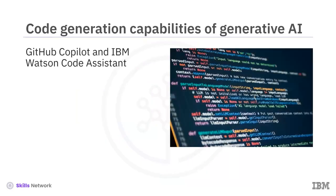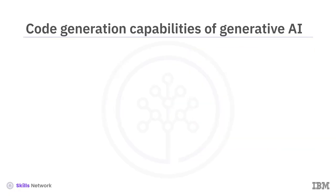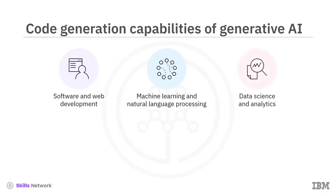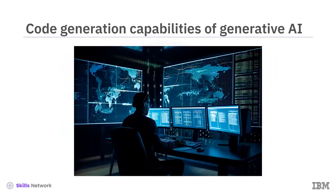GitHub Copilot and IBM Watson Code Assistant are AI-based programming assistants that help autocomplete code, accelerate hard tasks, and generate code for provided input. AI-generated code can be used in software and web development, machine learning, and natural language processing, data science and analytics, robotics and automation, virtual game and AR-VR environment development, and audio, video, and speech processing. Software developers can benefit from leveraging code generation capabilities to write, debug, and test their code.